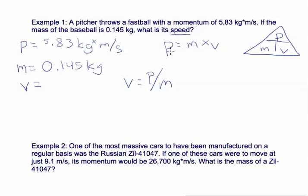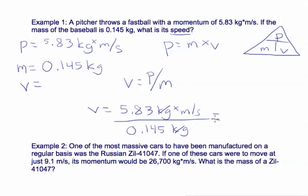And again, this is lowercase p because capital P is pressure. So 5.83 kilograms times meters per second divided by 0.145 kilograms, and you can see our kilograms cancels out, giving us meters per second, which is a good unit to have when you're talking about velocity, and you get 40.2 meters per second.